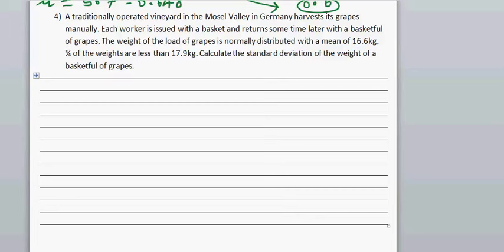A traditionally operated vineyard in the Mosel Valley in Germany harvests its grapes. Each worker is issued a basket and returns with a basket full of grapes. The weight of the load of grapes is normally distributed with a mean of 16.6 kg. Three quarters of the grapes weigh less than 19.7 kg. So what does that mean?